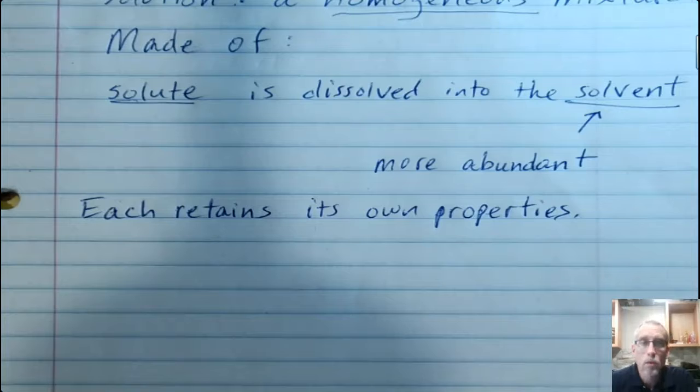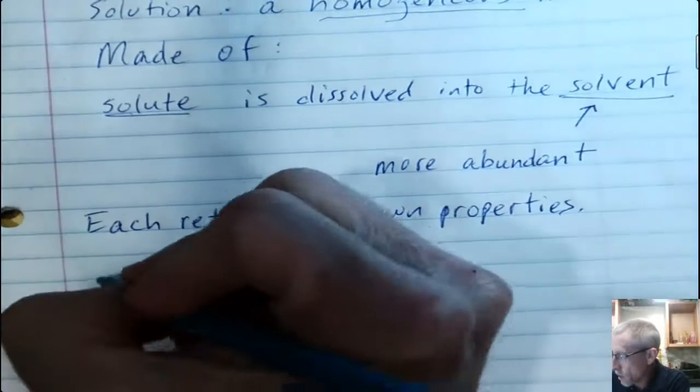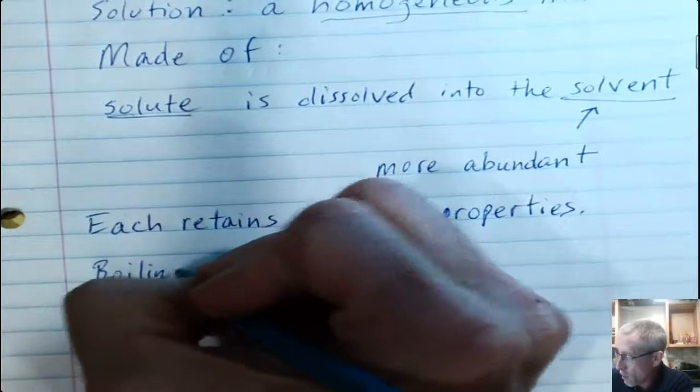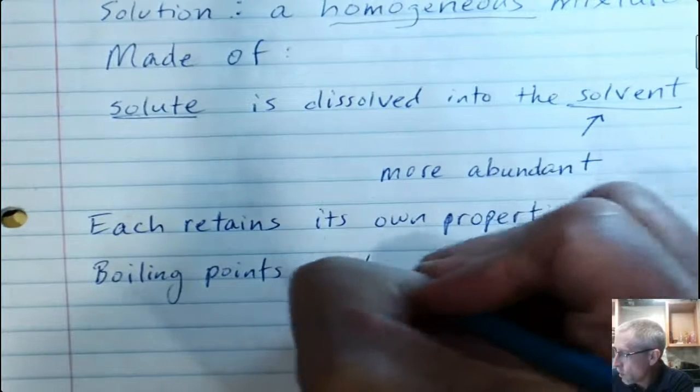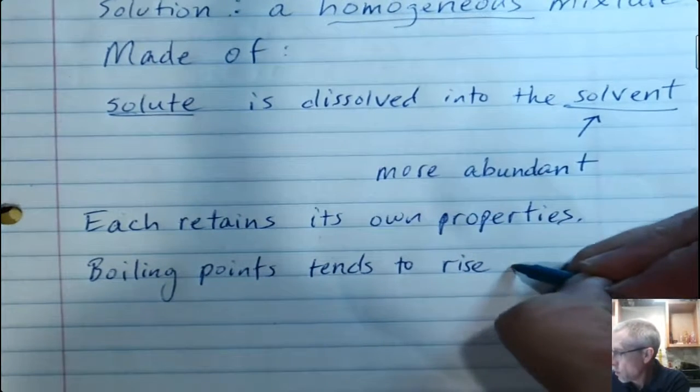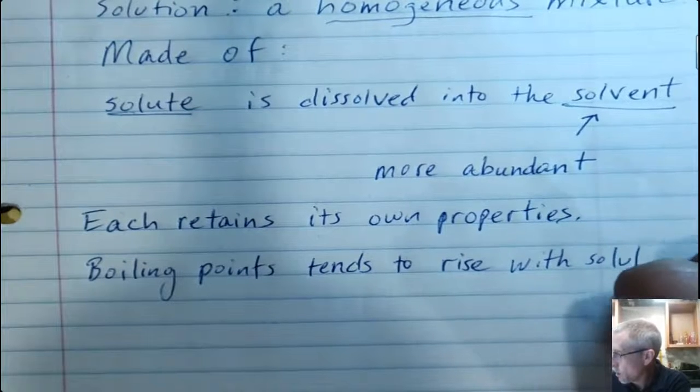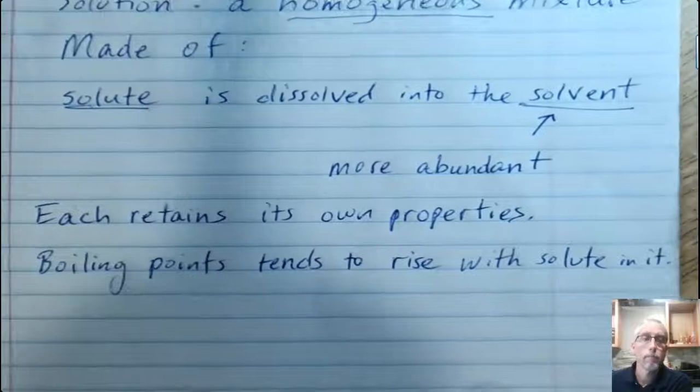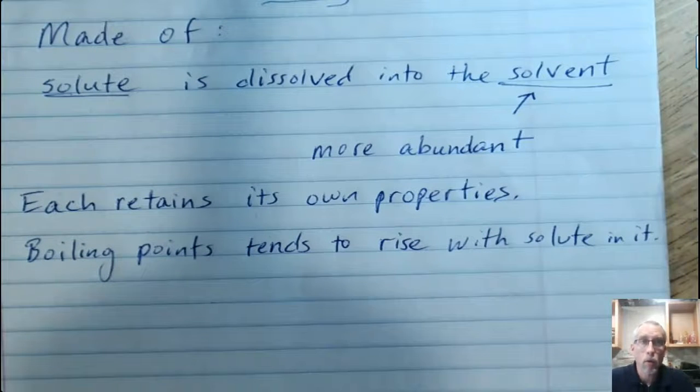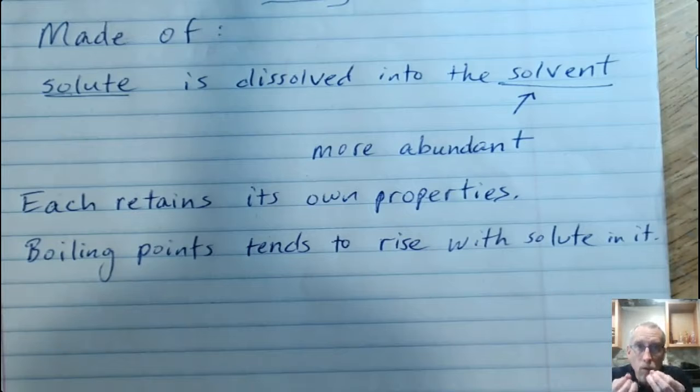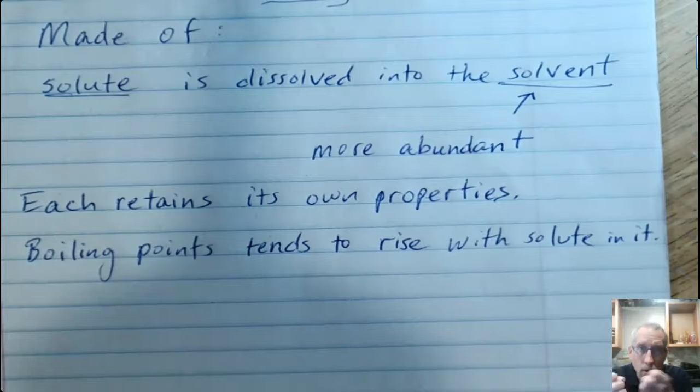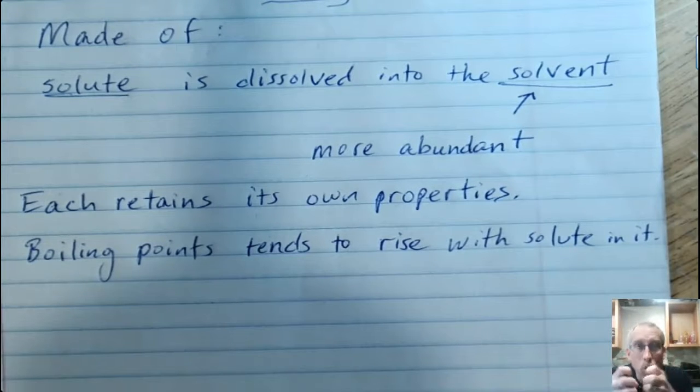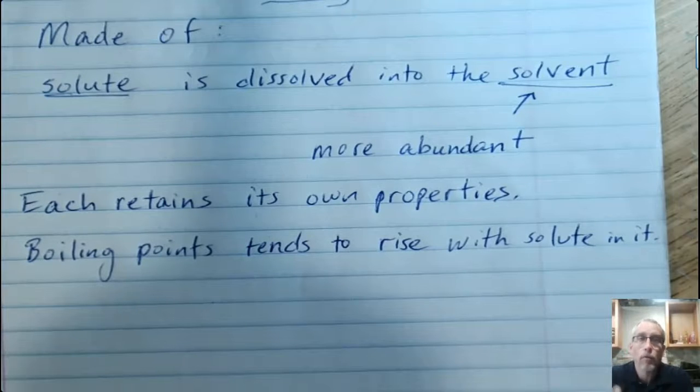While each substance retains its own properties, some of these properties can be a little bit different when things are mixed together, as opposed to when they're separate. For example, the boiling point of water, or any solvent for that matter, tends to rise with a solute in it. In order for water to boil, those particles of water have to break free from each other. They're held pretty tightly to each other. The energy that we get in there from the fire, or whatever we're using, tends to energize those, and eventually they break free. Well, the salt actually helps to hold those things together. So it takes even more energy, a higher temperature, for those to break free.